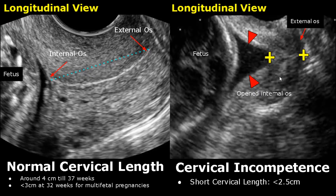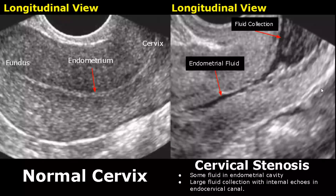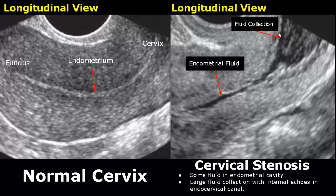Visually, we can see that the cervix here is much shorter than the cervix in the normal image, and this is the fetal head. Cervical stenosis is the abnormal narrowing of the cervix. On ultrasound, it is difficult to diagnose, but we may see some endometrial fluid and a large fluid collection with internal echoes in the endocervical canal.